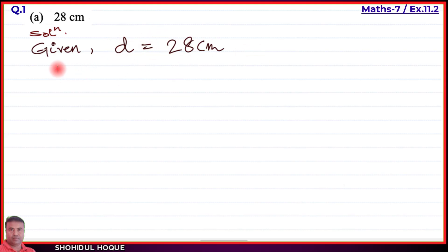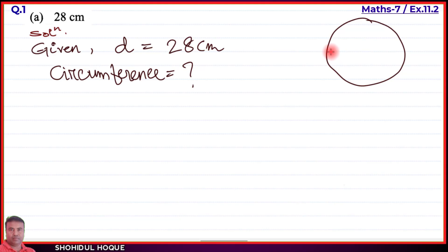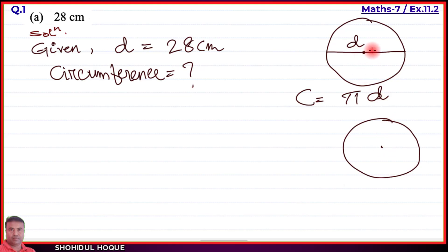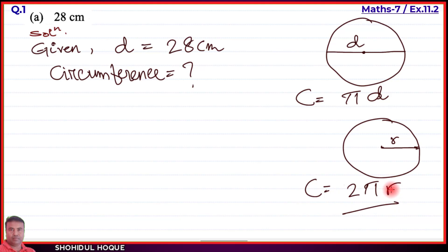We need to find the circumference C. The formula for circumference of a circle uses radius or diameter. The formula is C equal to 2 pi r, where r is the radius. Since we have the diameter, we can also write circumference equal to pi times d. We will apply this formula to question number one.